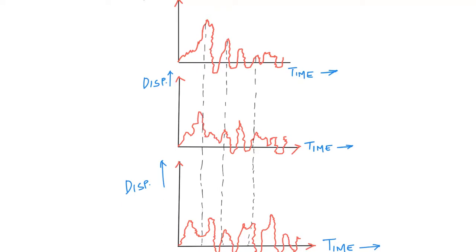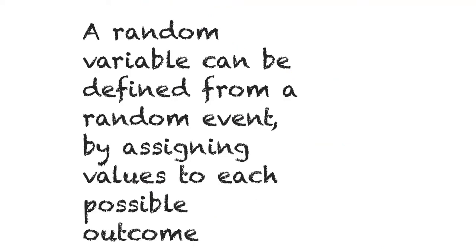These random variables are assuming different values in each of your sample functions. The question is: using probability, can I figure out what kind of probability distribution fits each of these random variables, and can I make some engineering judgment? For example, the average displacement the wheels will experience is only this much, so I should design accordingly. You introduce this kind of damping because this is the expected roughness of the road — that's the outcome we want from this analysis.